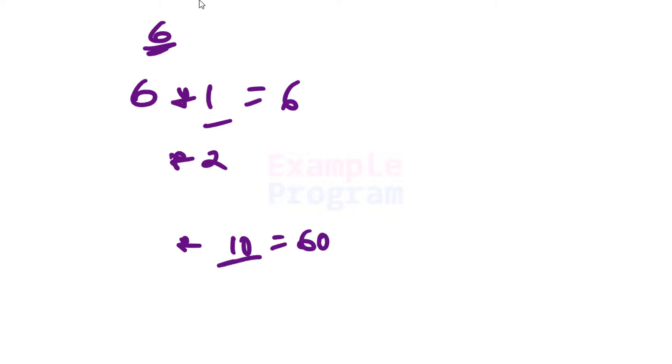We are going to ask the user to enter a number — let's say the user enters 6. We will take that number and start multiplying it starting from 1, displaying each result, up to a certain level, maybe up to 10. If you want, you can display the multiplication table up to any number you want.